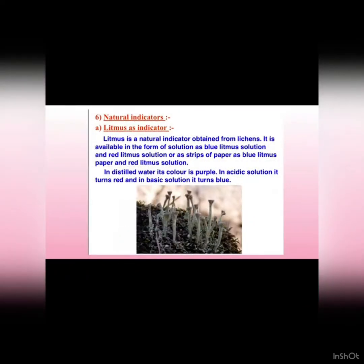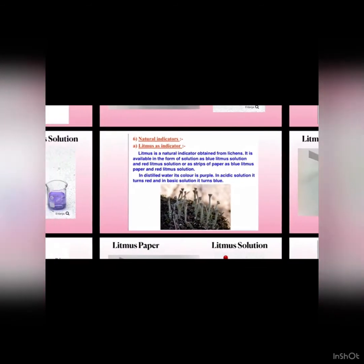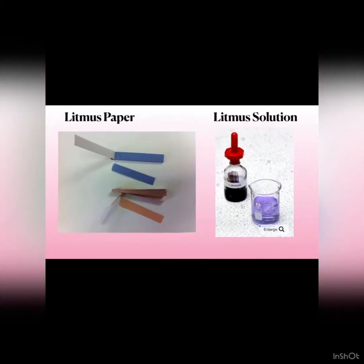Litmus is a natural indicator which is obtained from lichens. It is available in the form of solution as well as in the form of strips. It is purple in color. When it is mixed in an acidic solution, it turns red, and in a basic solution, it turns blue.